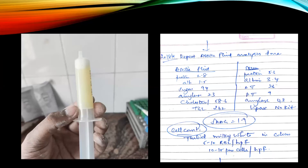We directly went ahead and did both pleural fluid and ascitic fluid analysis. This time we got a milky fluid sample. On analysis, we found triglycerides of 262 mg/dL — which had not been tested anywhere previously. With these results we proceeded to the next investigation.